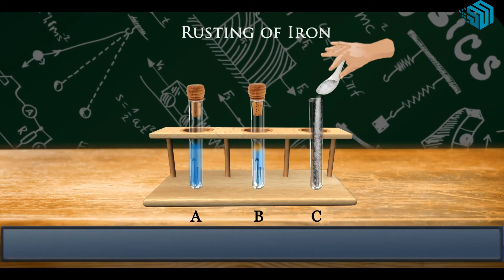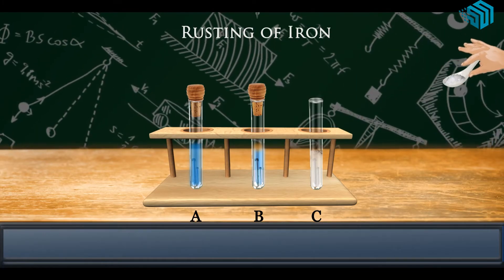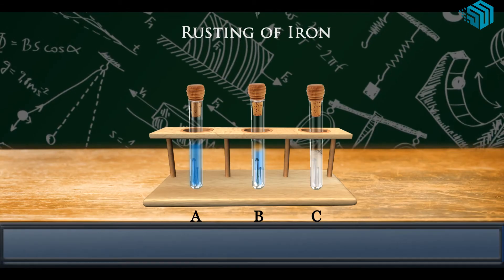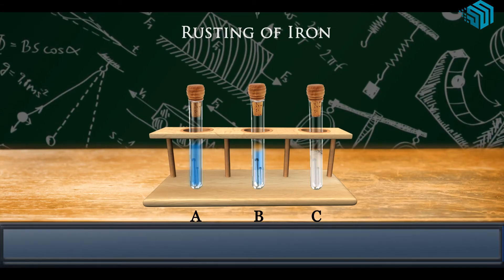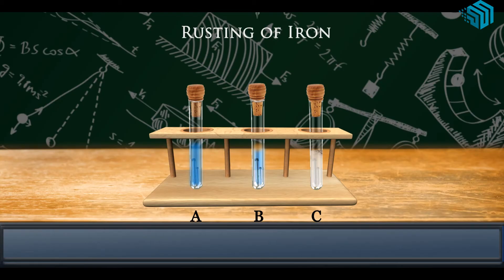Add anhydrous calcium chloride in test tube C and cork it. Anhydrous calcium chloride will absorb the moisture from the air present in the test tube.